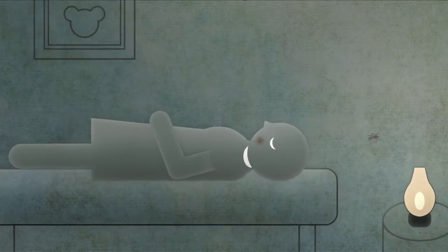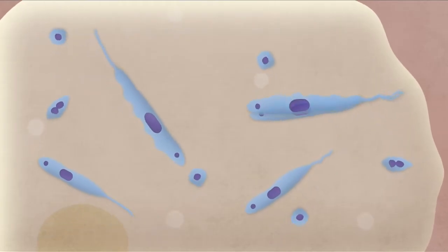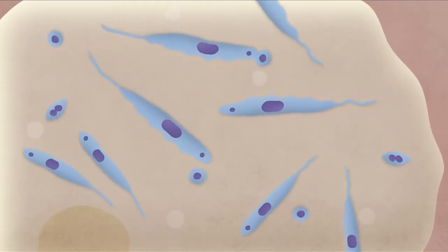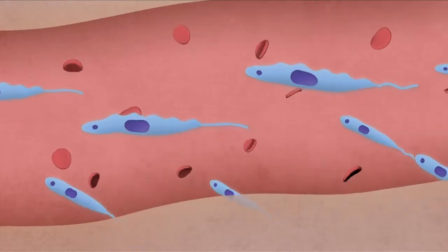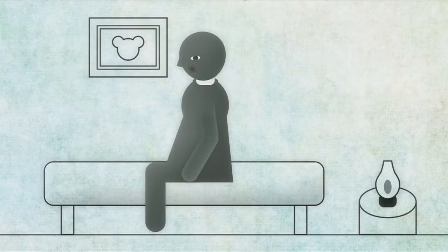The parasite that causes Chagas disease transforms throughout its life cycle. The parasite penetrates the tissue cells and multiplies before entering the bloodstream. Once in the bloodstream, it infects even more cells.